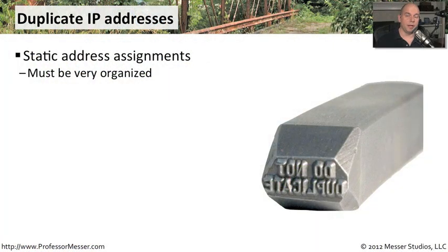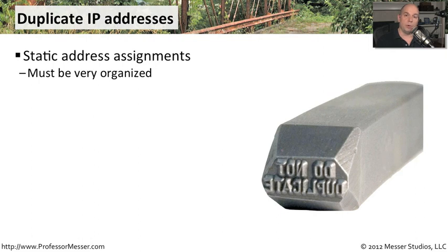When there's a duplicate IP address on your network, the stations that are duplicating themselves are not going to be very happy because they're not going to be receiving the information they would expect to see on the network. Those machines will probably have a conflict and be fighting with each other. Sometimes they'll receive traffic, sometimes they won't, and it creates a number of conflicts within both those workstations and perhaps even the switch. If you have statically addressed devices on your network, you have to be very careful not to duplicate any IP addresses, and the more static addresses you have, the more you need to be concerned about this.